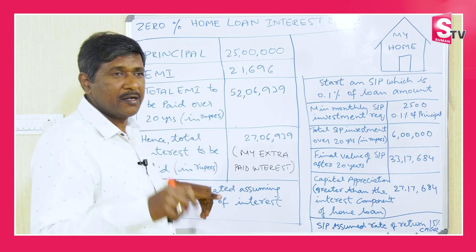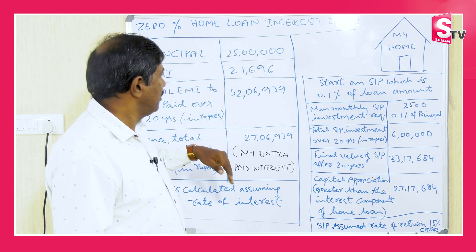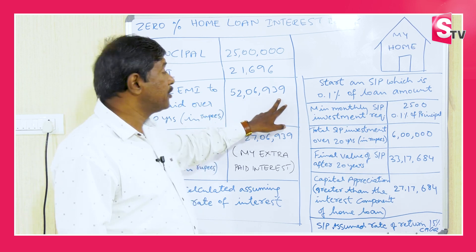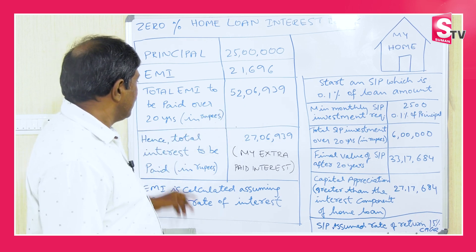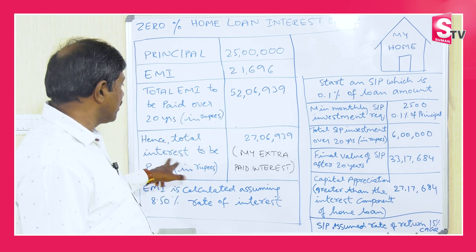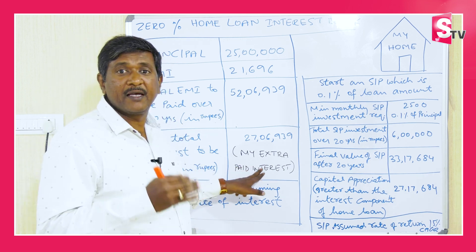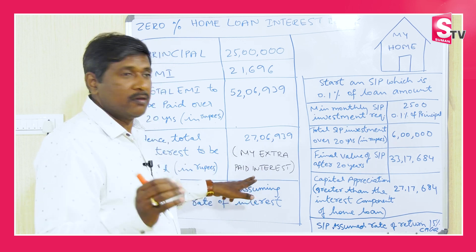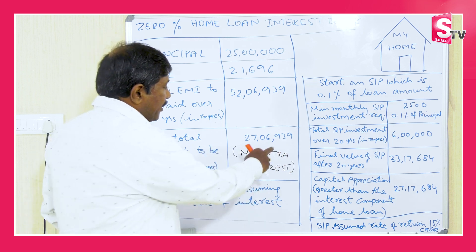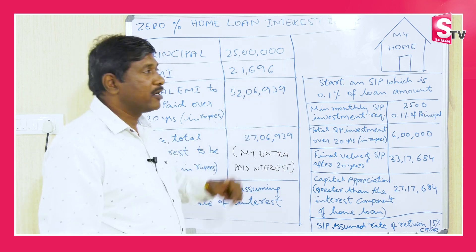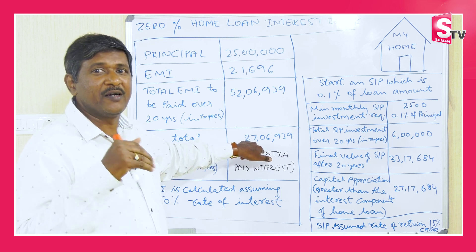So in 20 years, the principal is 25 lakhs. Overall, the total amount paid is 25 lakhs plus 52 lakhs, 06,939. That's the logic — the total interest to be paid to the bank is the extra amount. So the extra amount I am going to pay the bank is around 27 lakhs, 06,939.